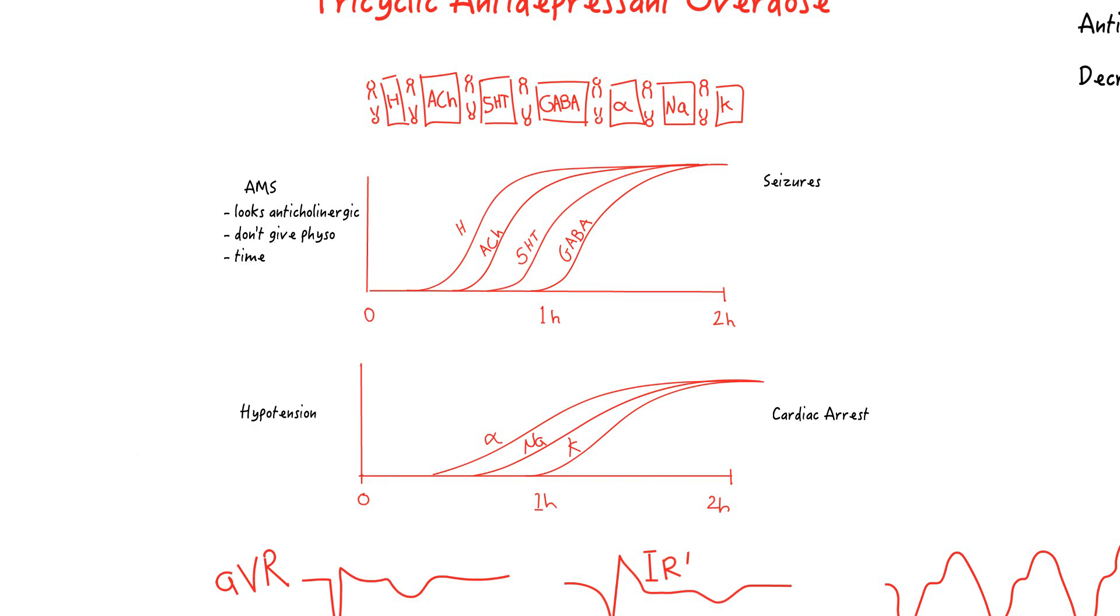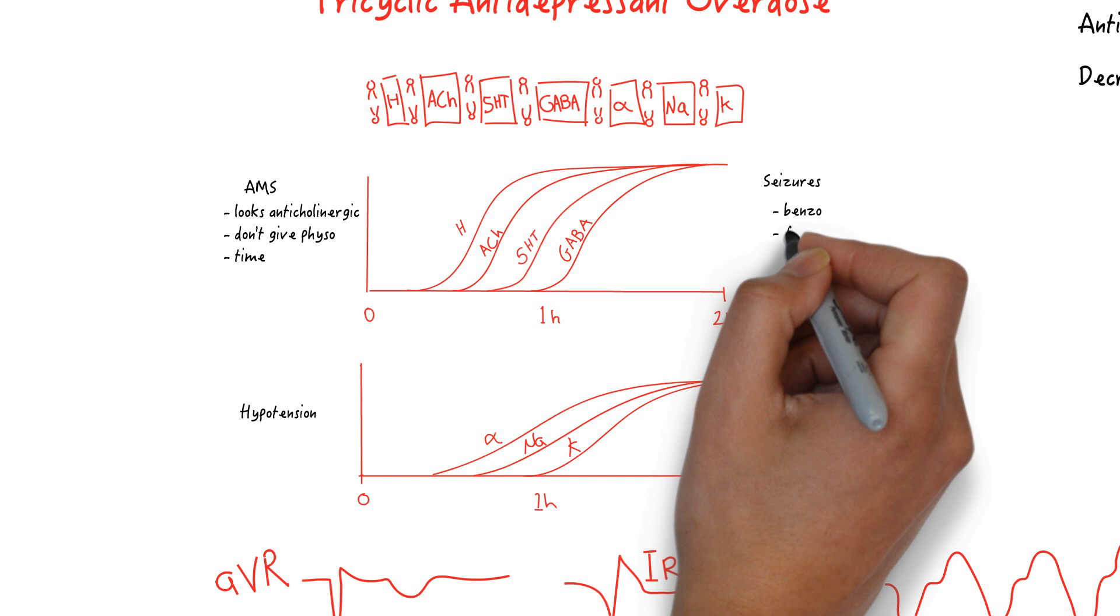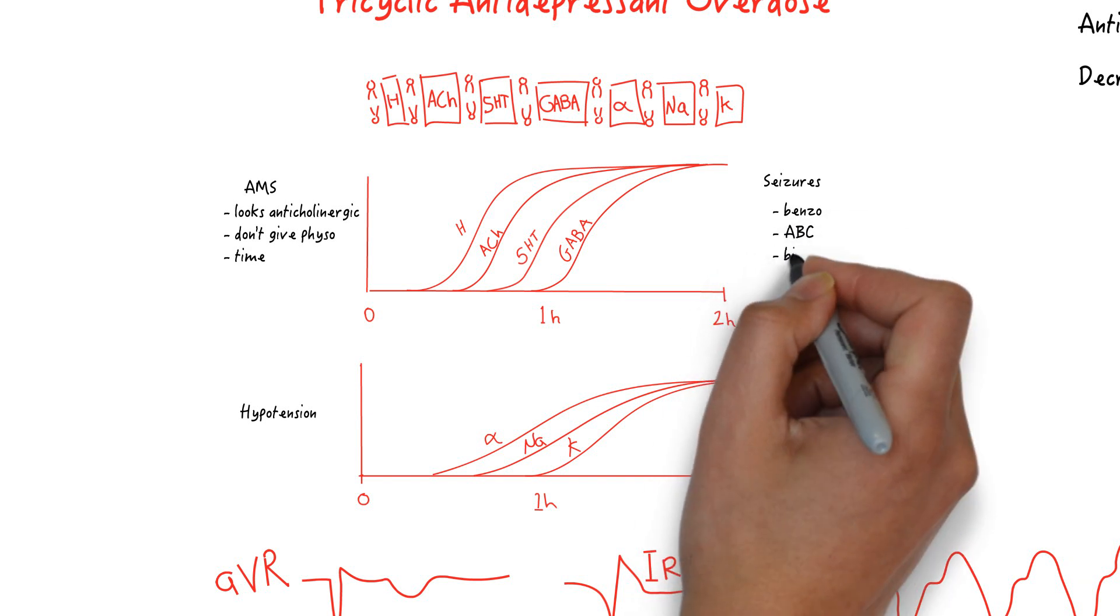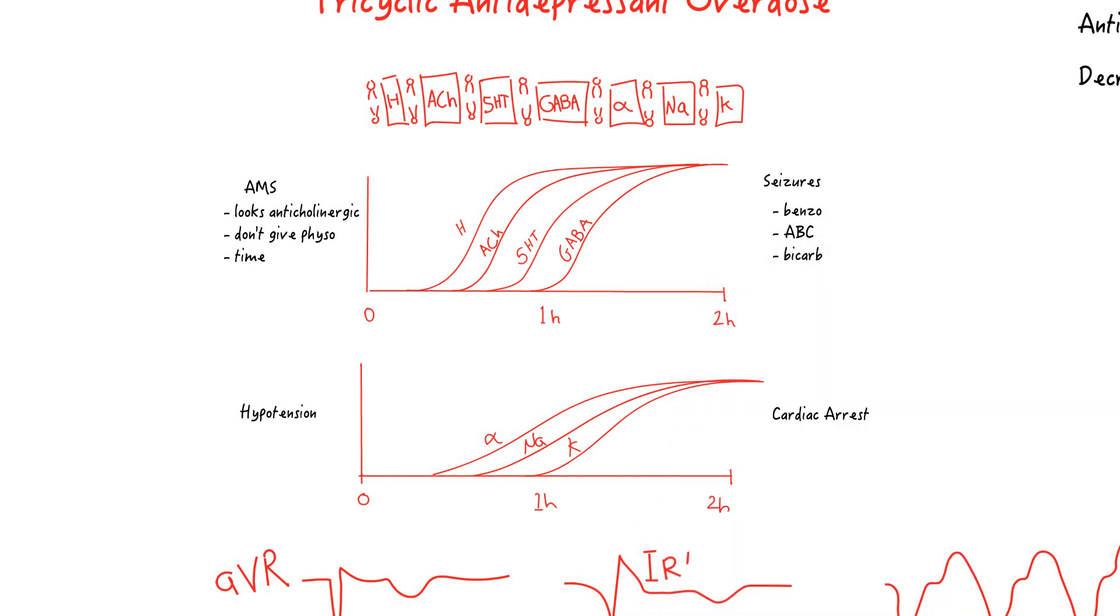For the seizures, this is very responsive to benzodiazepine. However, you must quickly control the ABCs and make sure to alkalinize against the acidosis that has surely developed.